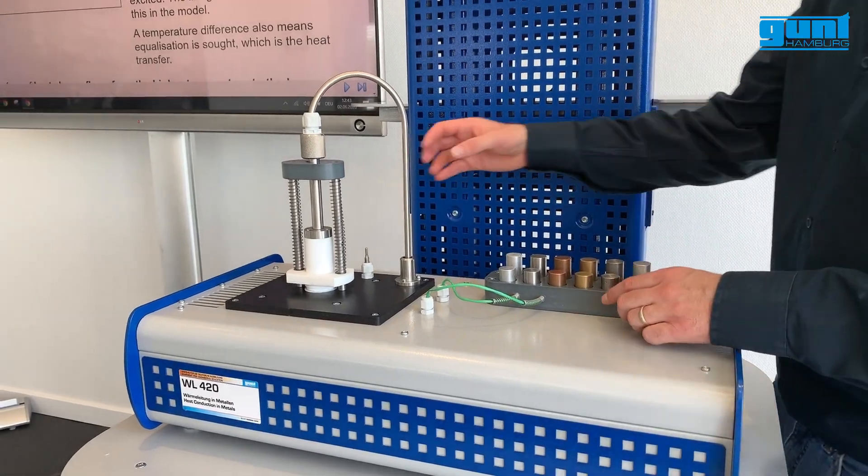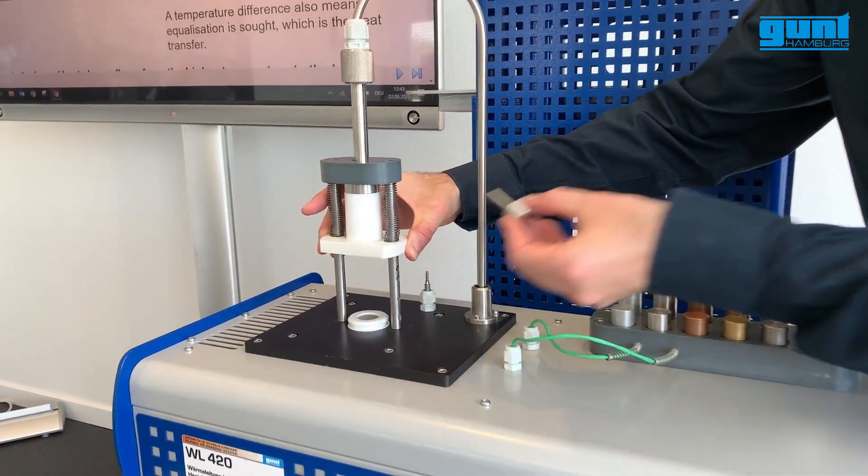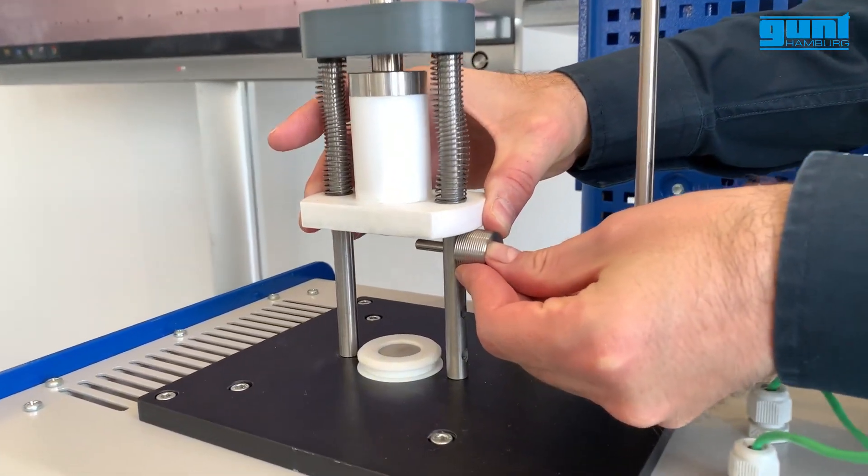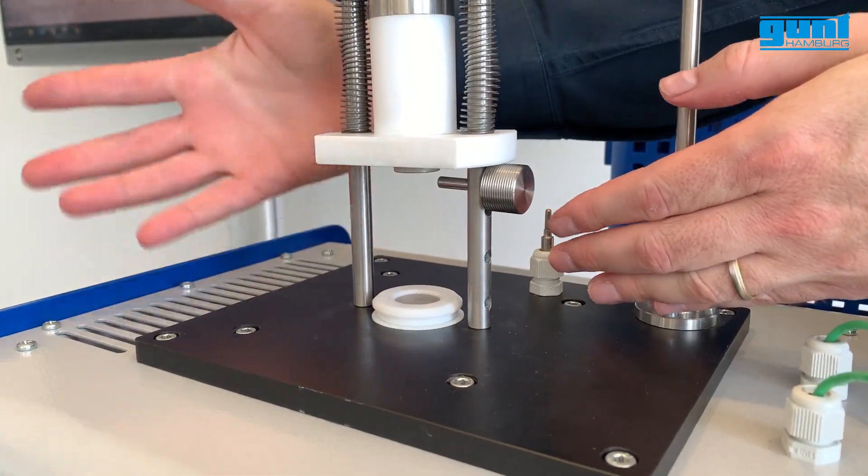For the calibration process, the spring-loaded device is locked in the upper position without a specimen. This way, all the electrical heat is dissipated via convection. When starting up the software, which is supplied with the unit and installed on any Windows-enabled device, you can select one of four languages. For the calibration process, you select calibration from the test menu.